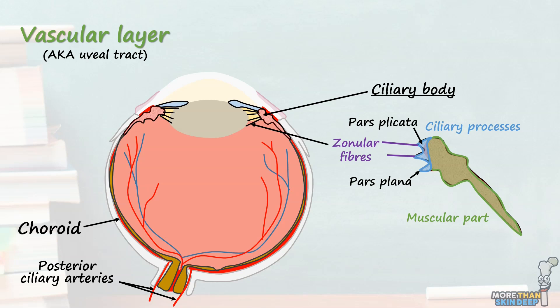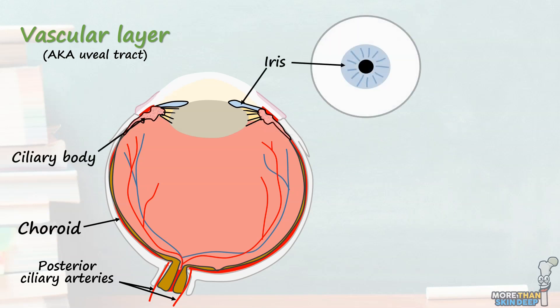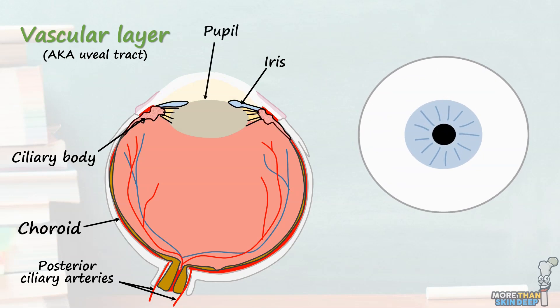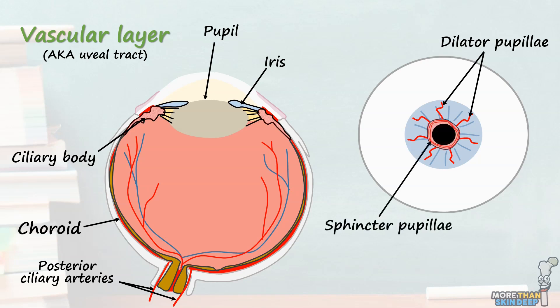Another important function of the ciliary body is the secretion of aqueous humour, which provides structure to the anterior part of the eye. The last structure of the vascular layer is the iris, which you can see as the coloured part of the eye. The iris is a thin, pigmented diaphragm with a central aperture called the pupil, which allows light to enter the eye. The iris divides the front of the eye into anterior and posterior chambers. The size of the pupil is controlled by two muscles: the dilator pupillae, which dilates the pupil and is innervated by sympathetic nervous system fibres, and the sphincter pupillae, which constricts the pupil and is innervated by parasympathetic nerve fibres. This occurs as a pupillary reflex in response to changes in light intensity.